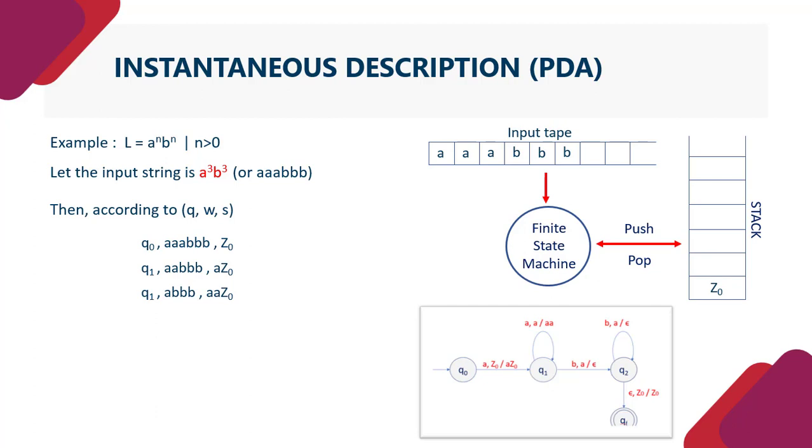Now if we are at Q1 and A is coming, then it is being pushed into the stack. So in stack we get A, A, Z0. Again if we stay at Q1, then another A is pushed into the stack.